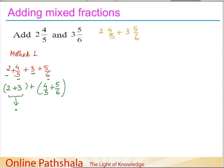Adding 2 and 3 gives 5. Now for 4/5 plus 5/6, since these are unlike fractions, we need to find the LCM to convert them to like fractions. The LCM of 5 and 6 is 30. We multiply 4/5 by 6/6 and 5/6 by 5/5 to get equivalent fractions with denominator 30.